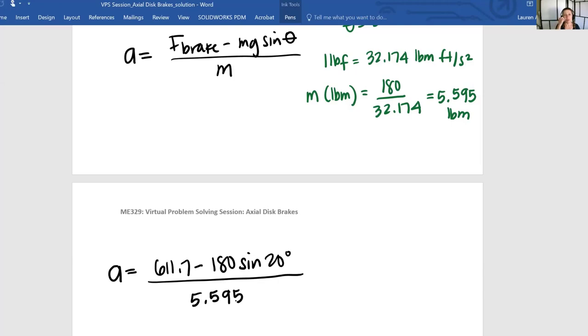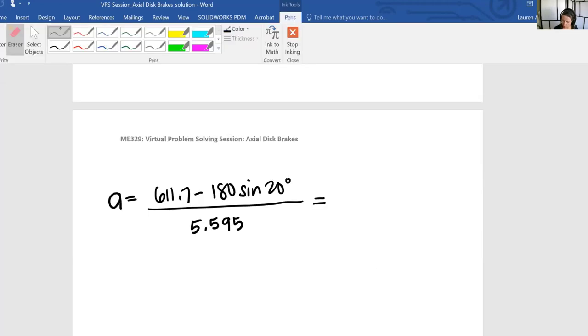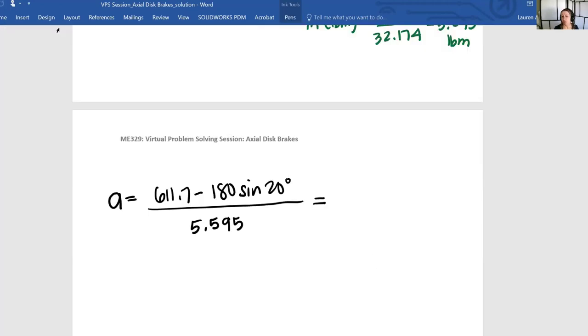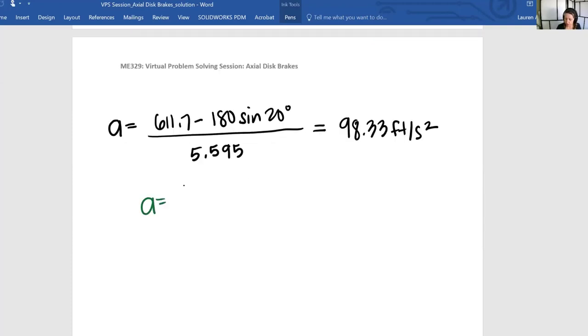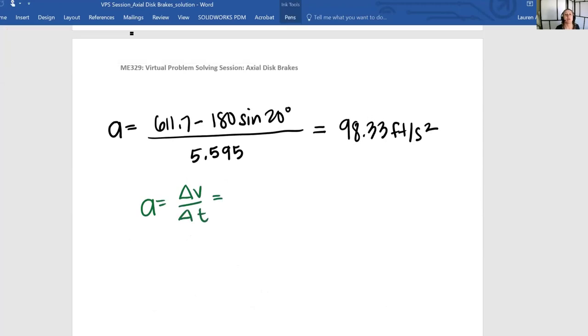Now we have a = 611.7 - (5.595 × 32.174 × sin(20°)) / 5.595. This gives us 180 pounds times sin(20°) divided by 5.595. In your homework you were given a flat surface, but I wanted to throw in an inclined plane for fun. The acceleration equals 98.33 feet per second squared.